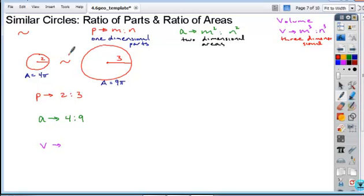If these were two spheres with the ratio of radii two to three, what do you think the ratio of their volumes would be? Two cubed, which is eight, to three cubed, which is twenty-seven. This is consistent for any similar figures.